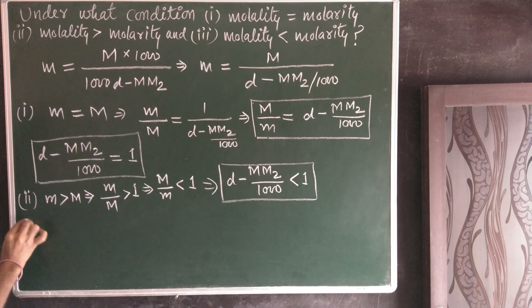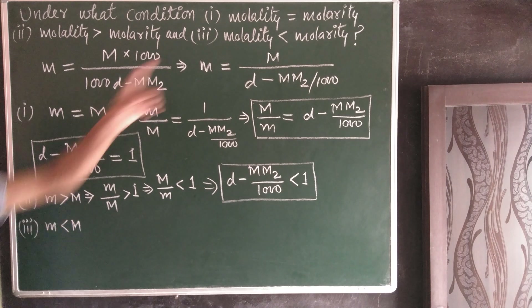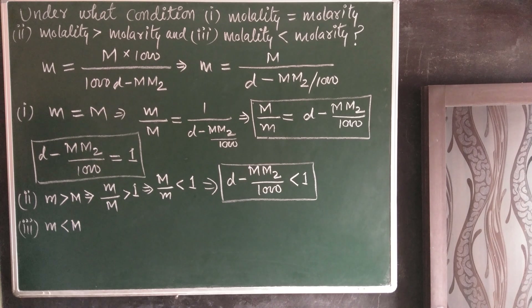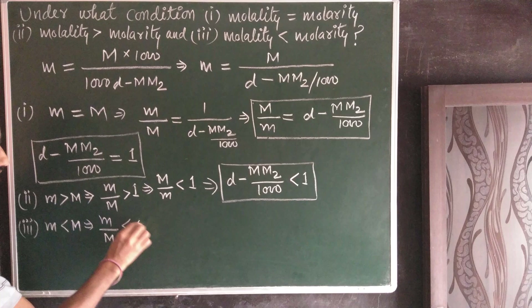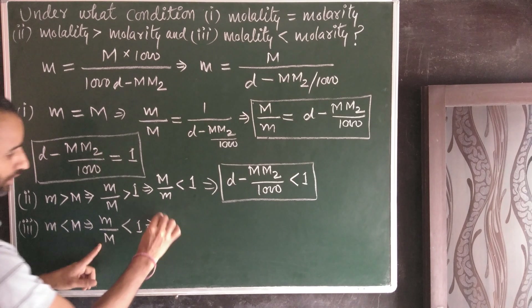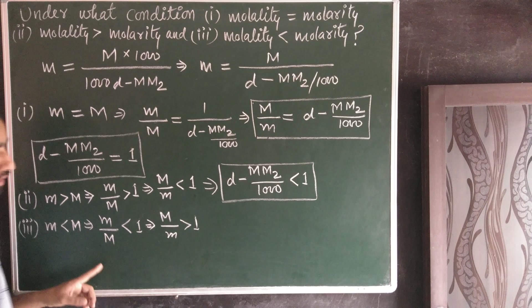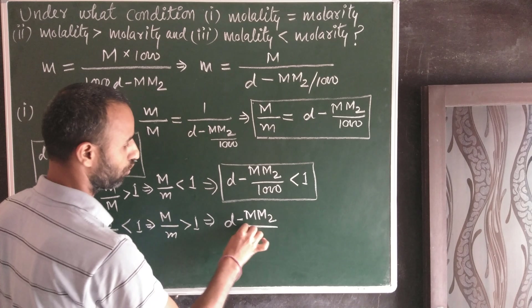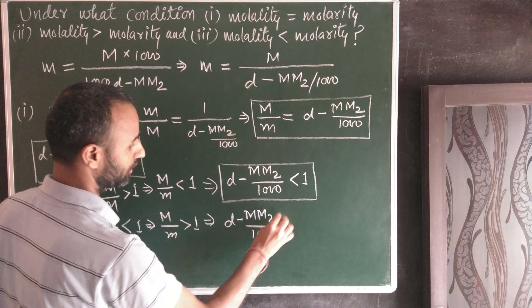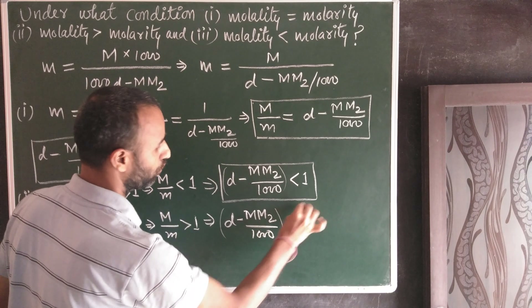Third case: if molality is less than molarity, that implies small m over capital M is greater than 1. Therefore, (D − M·M₂/1000) is greater than 1.